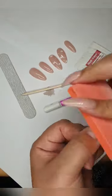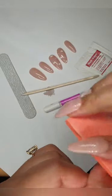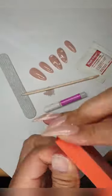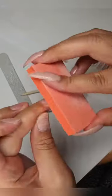Once you've done that, use the buffer block provided in your kit to buff all the shine off of your natural nails so the glue can adhere better.